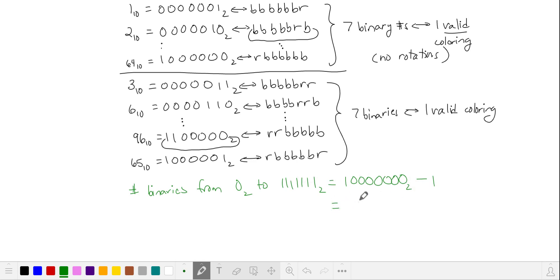This is two to the seventh minus one, but we're also including zero. So I'm going to add that one back in. So 127 plus one, which is this, is equal to 128.